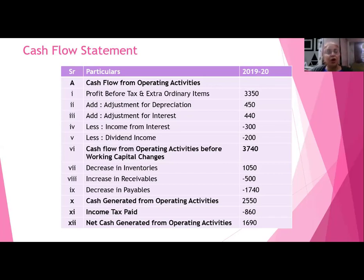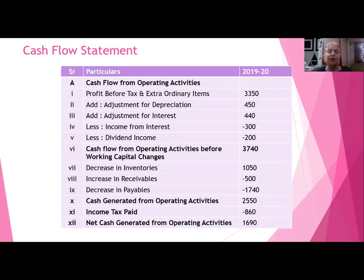Depreciation is an item which does not involve any cash outflow — please always remember that. It is only an accounting entry; no cash is going out of the business. Cash will only go out after a span of 10 or 15 years, whenever you want to replace that machine. So whenever we charge depreciation to our profit and loss account, cash flow will not get affected. Therefore, we add back depreciation to the profit before tax, because that amount was reduced from our profit but no cash actually went out.